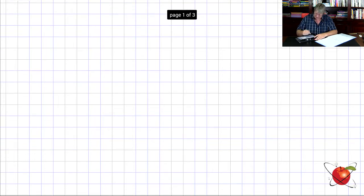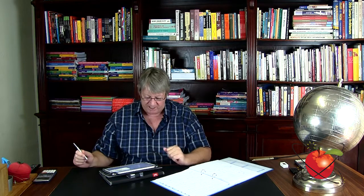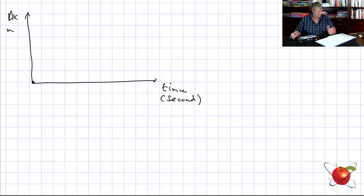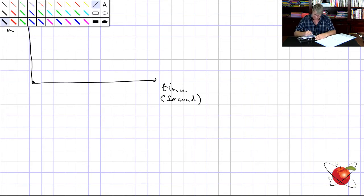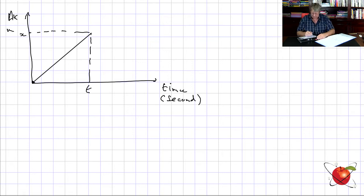Let's put down a time-displacement graph. Here's my graph — time in seconds on the horizontal axis, displacement in meters on the vertical axis. At time zero we're at the origin, and at some time t we are x meters away from the origin.